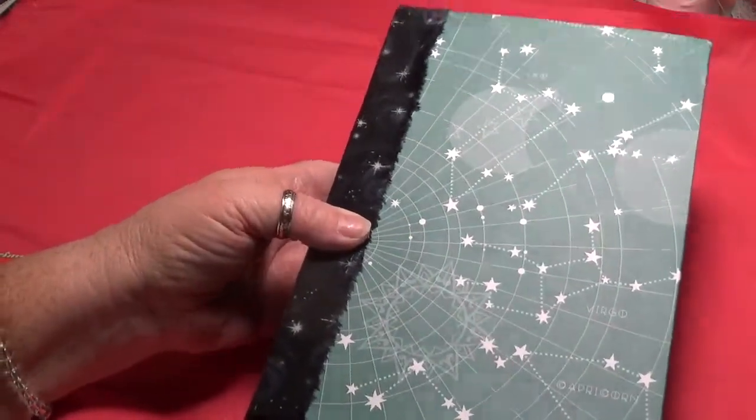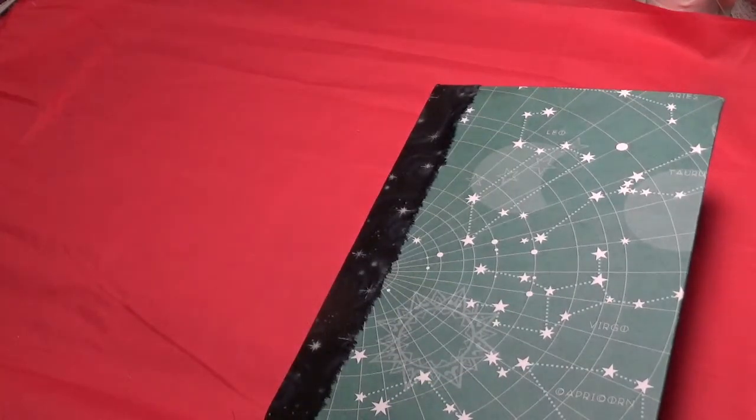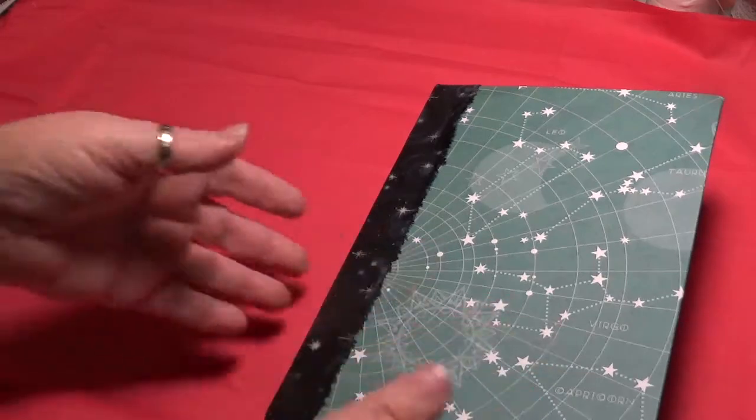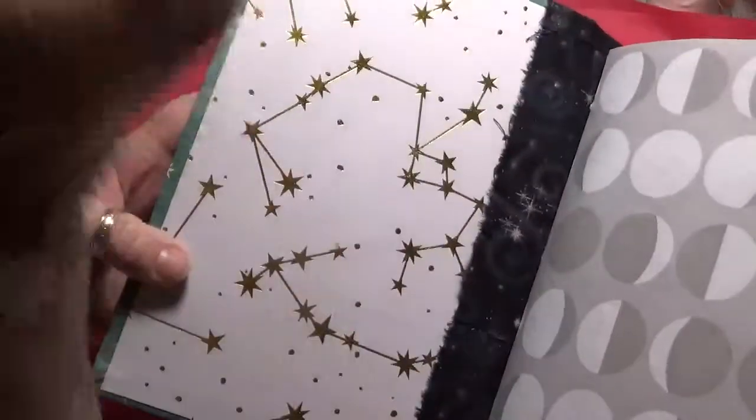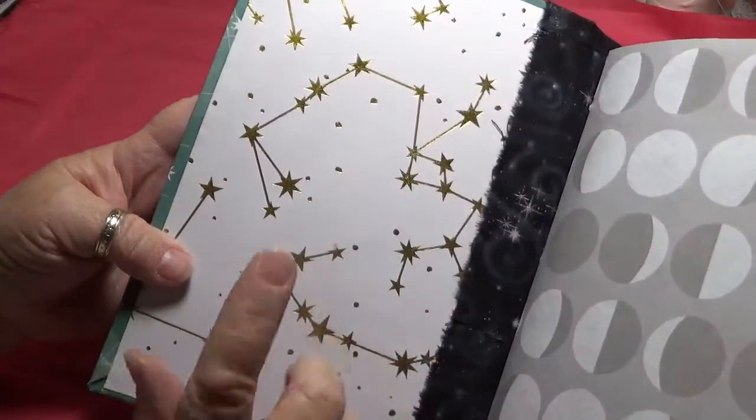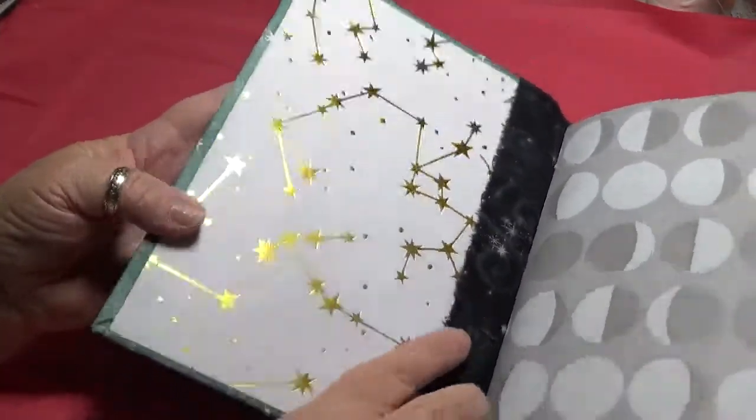The scrapbook paper is from a galaxy paper pad and then the inside is also galaxy. And then there is the fabric.